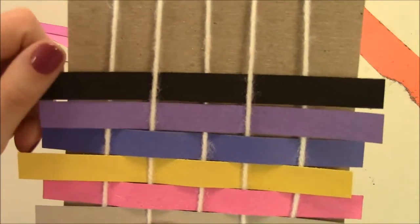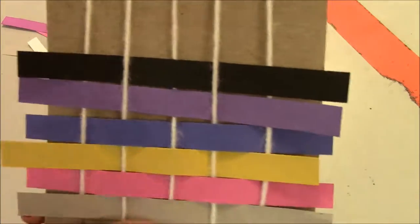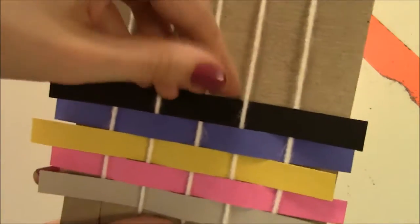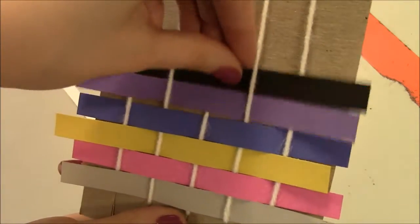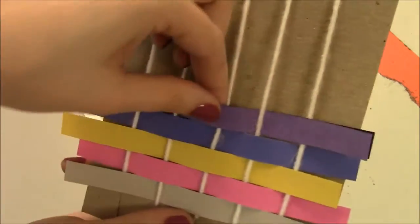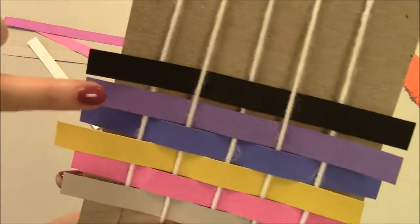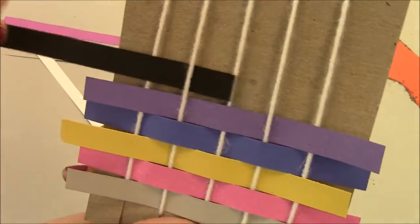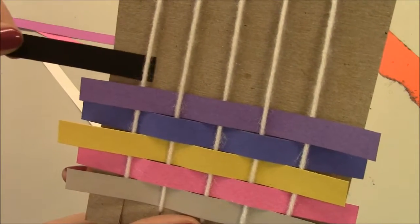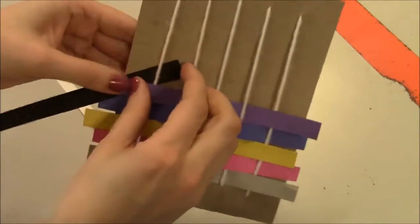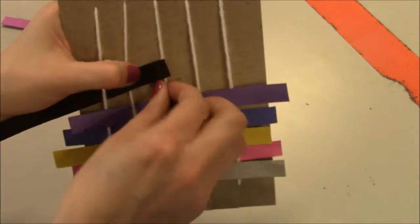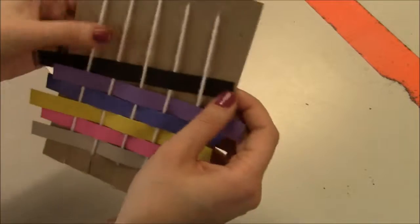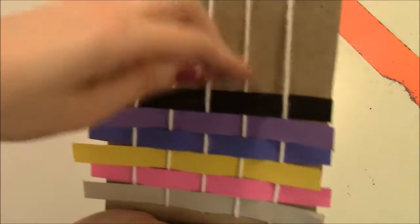If you notice, my purple and my black did not switch. So when I try to push my black down, it's going to cover up my purple. Or it could go behind the purple. That means I've done it wrong. So I need to look, what did I do wrong? I went over and over. I forgot to switch. So I'm going to take one out. And now I'm not going to go over first. I'm going to go behind first. And now when I push it down, it should be locked in.